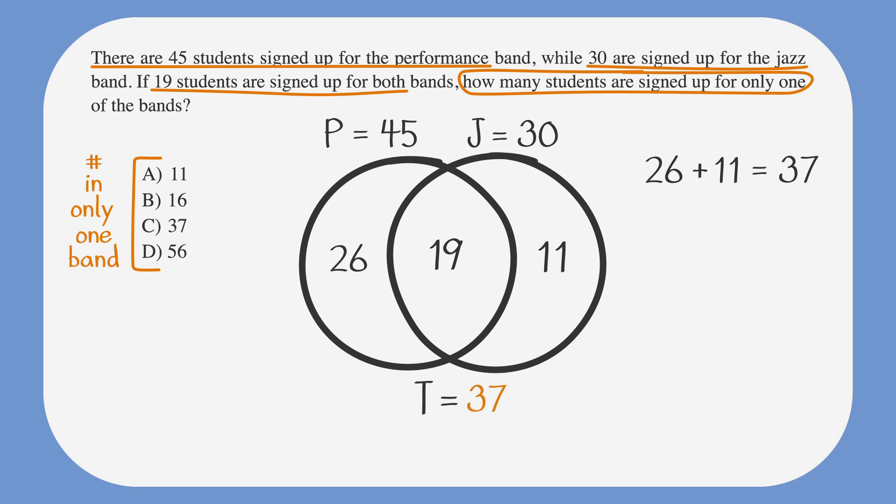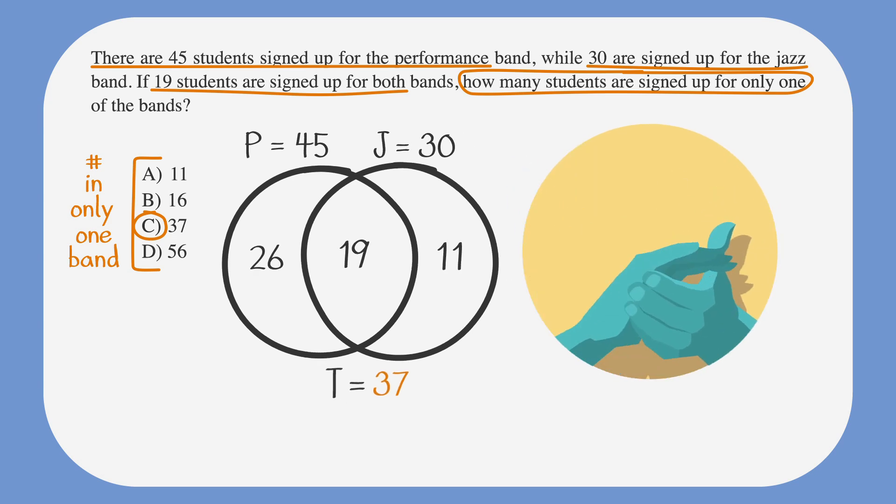Looking at our answer choices, answer choice C is 37. So go ahead and circle it. Take a bow and enjoy a round of applause for that top tier performance.